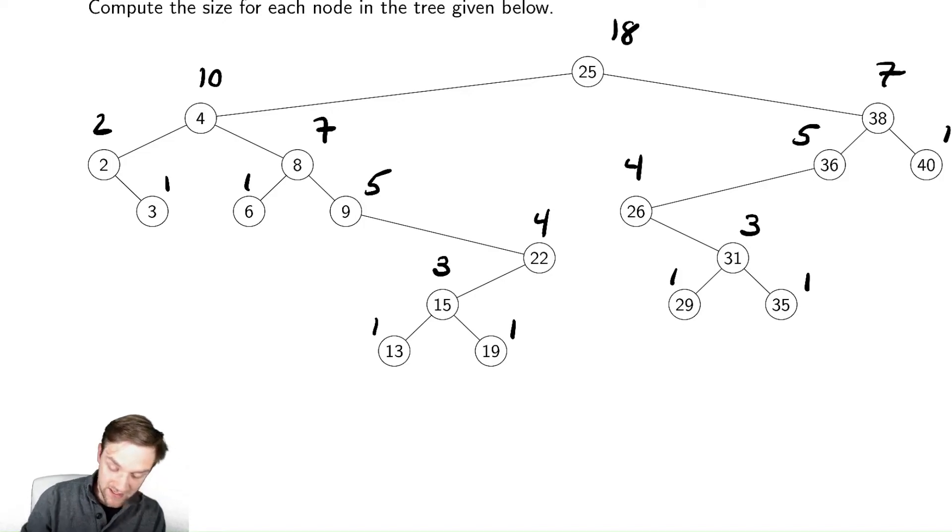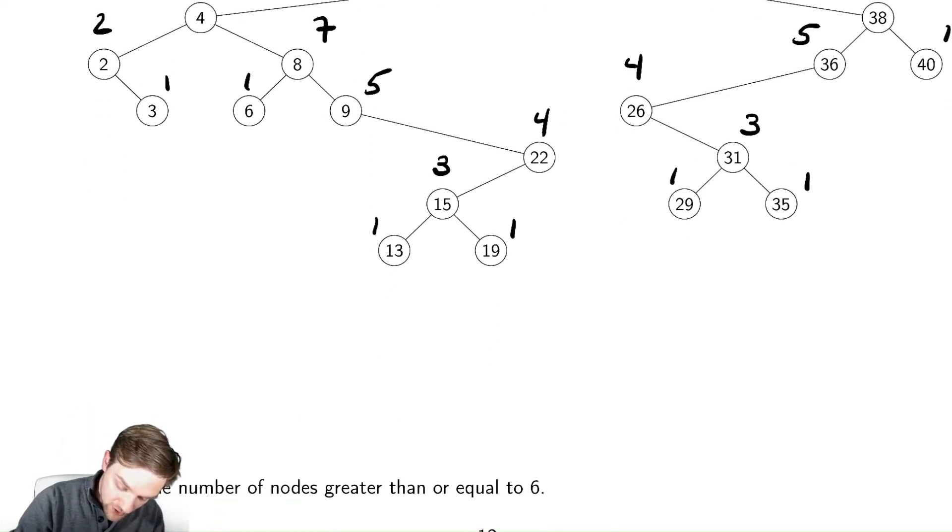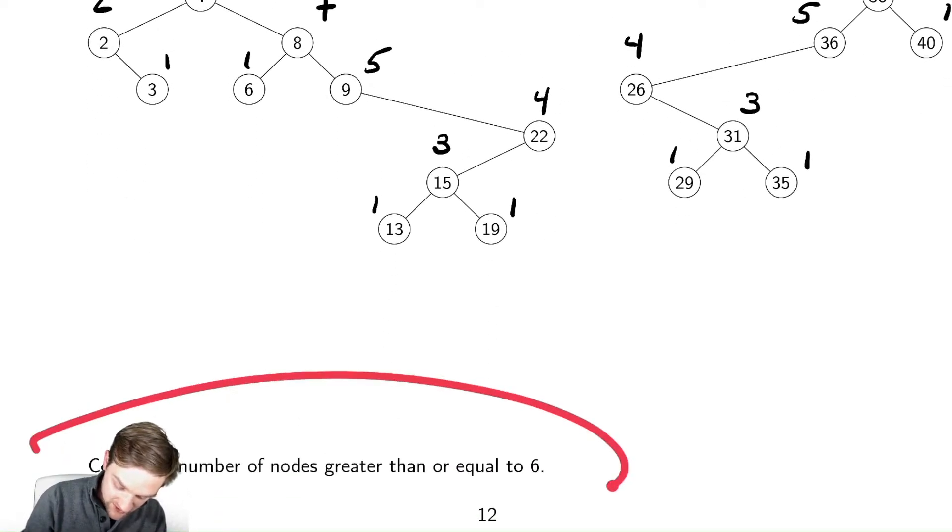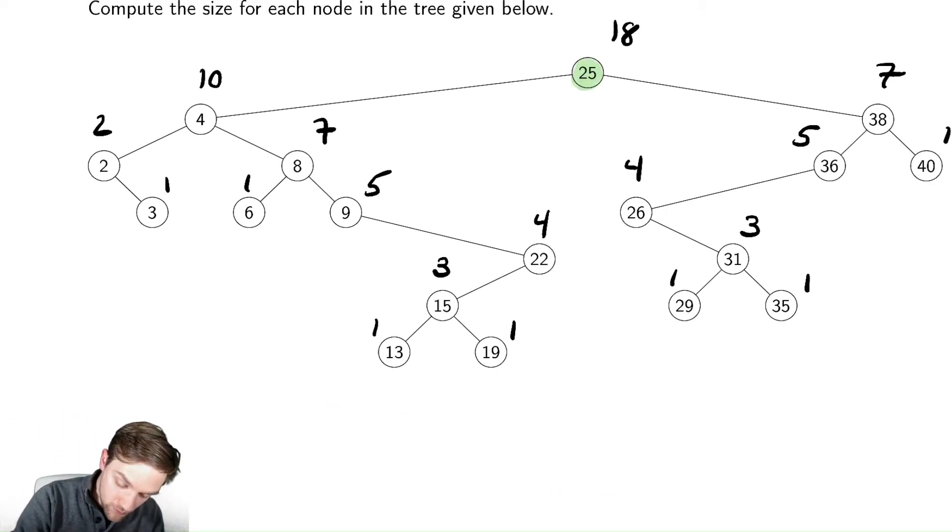What if we wanted to find the number of nodes greater than or equal to 6? How can we do this very efficiently? If I start at the root, I never need to search over here, because I already know every single one of those nodes is greater than or equal to 25.